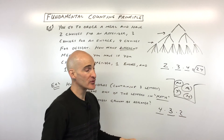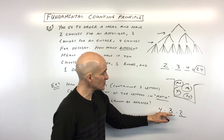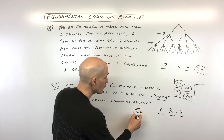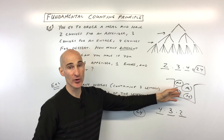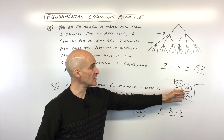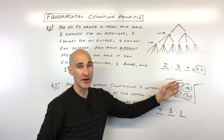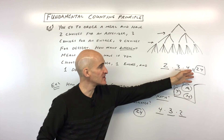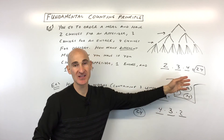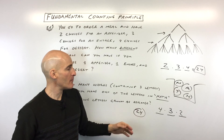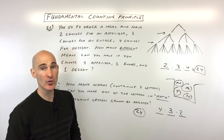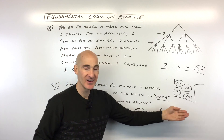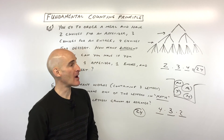So if you multiply those together — 4 times 3 times 2 — you get 24. There are 24 different three-letter words you could make with the letters M-A-T-H. It's a coincidence that it came out to the same number as before, but that's how you work with it: look at how many choices there are at each step and multiply them together.